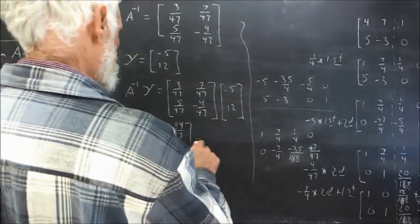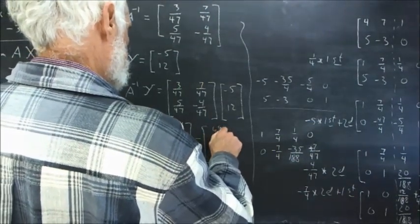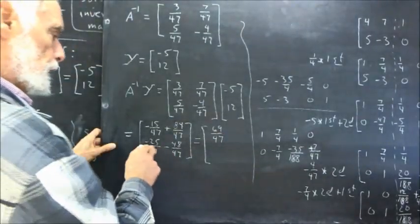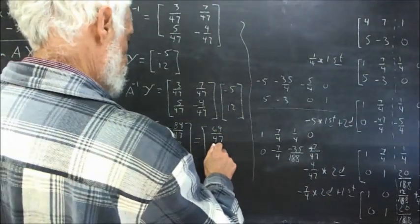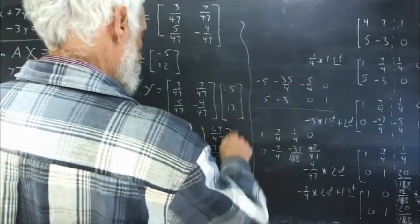And these are easily added. Then we get 69 over 47. And here we get negative 73 over 47.